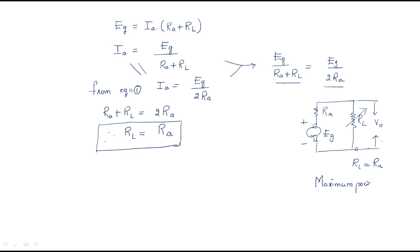This is the maximum power transfer theorem. Maximum power can be transferred from source to load when the load resistance is equal to the source resistance. This is the condition. We will also get the generated EMF: EG equals load voltage plus IA·RA.